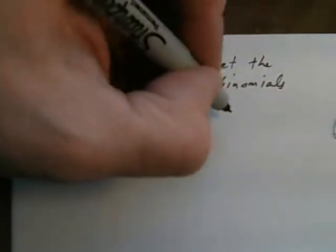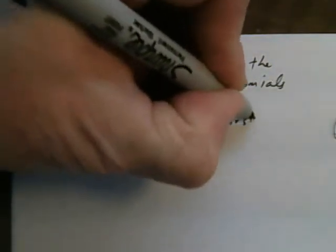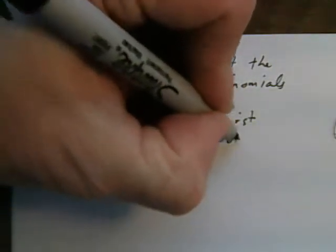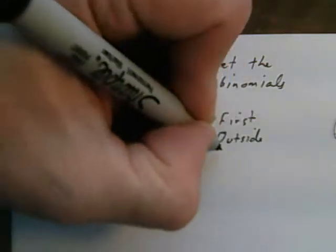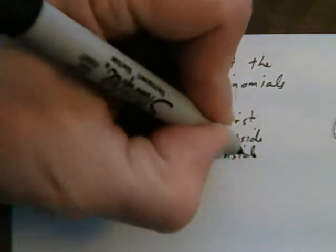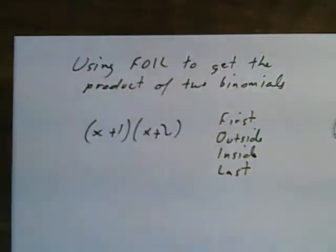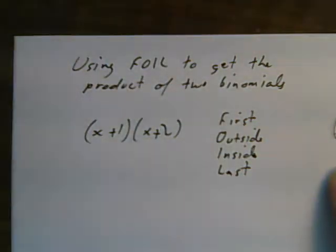Remember that FOIL means first, outside, inside, last. This is the order that we multiply the different terms inside the two binomials.